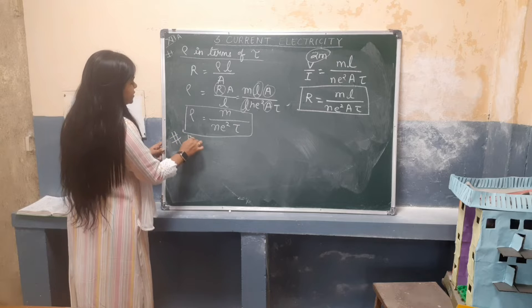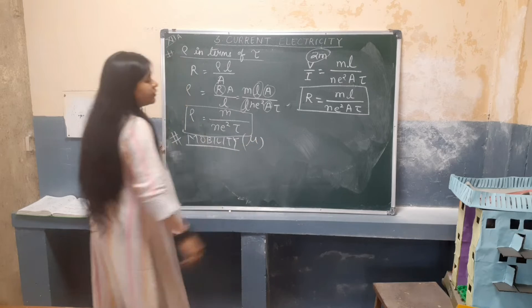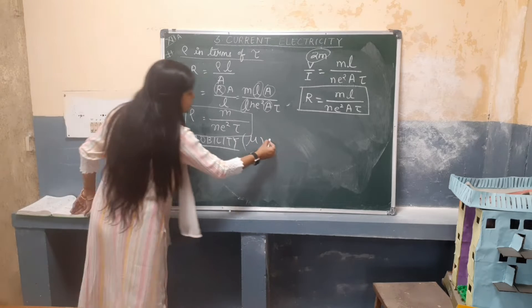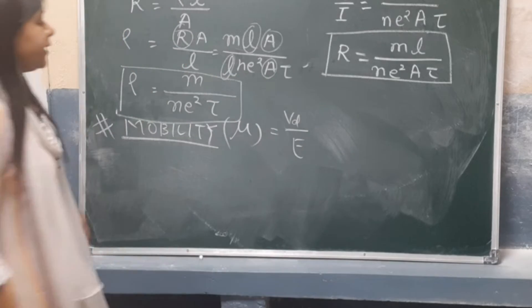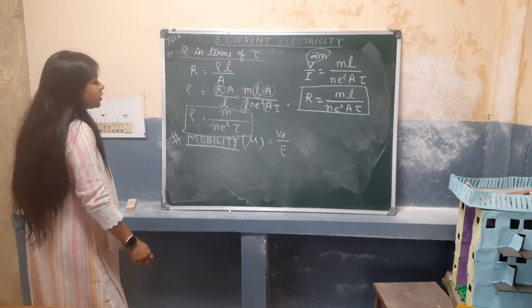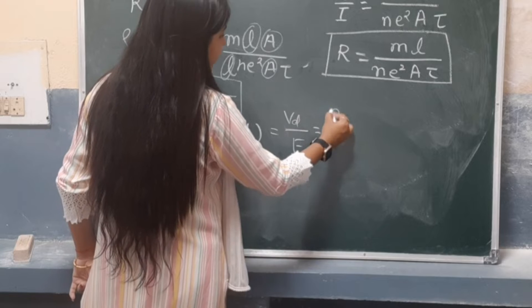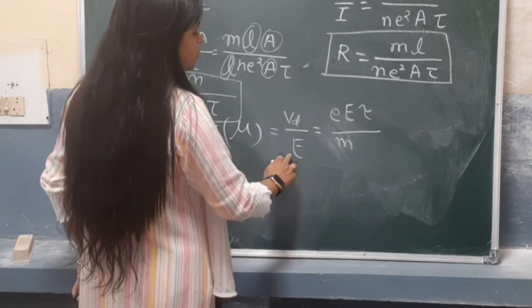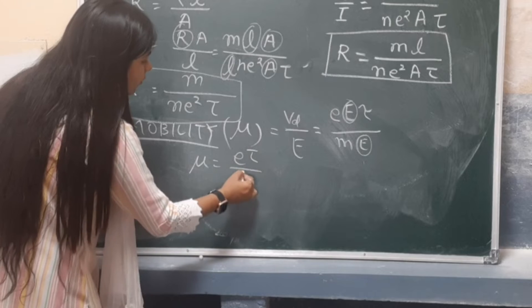Now we have another very important concept: mobility. In our examinations it is always asked — what is mobility, what is its significance, and what is its expression? Mobility means drift velocity per unit electric field. The drift velocity equals eEτ/m, and dividing by electric field E, we get the value of mobility as μ = eτ/m.